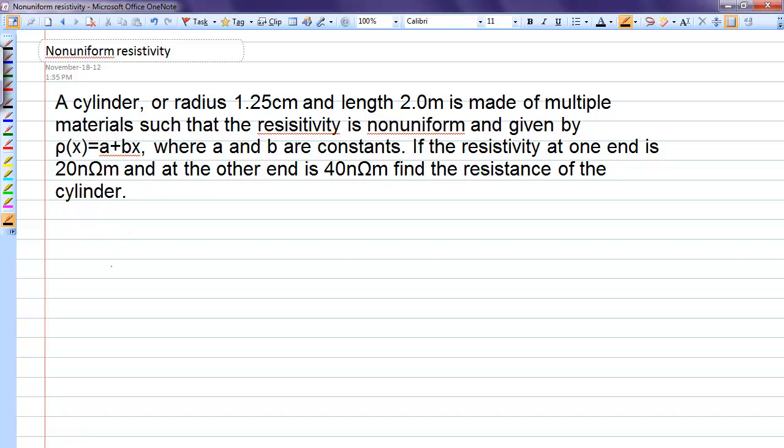In this problem, we have a cylinder that is of the same cross-sectional area throughout its length. Its length is 2 meters, and its radius R is 1.25 centimeters.